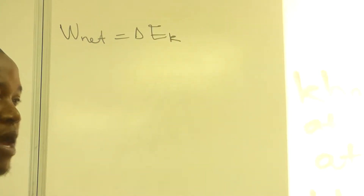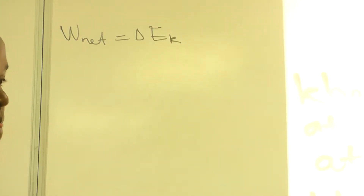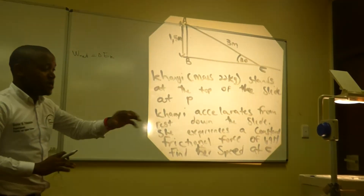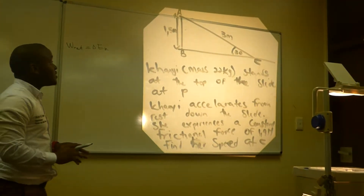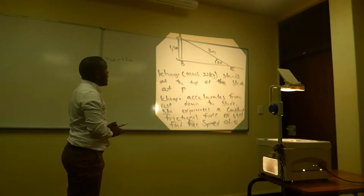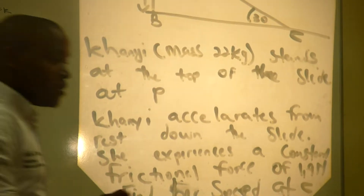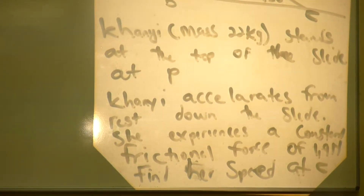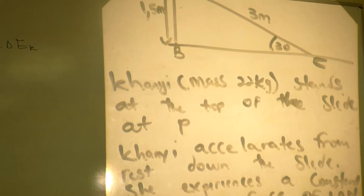Now we have a problem on the board. We have Kylie, and we have a ramp with points A, B, and C. Kylie is standing at the top of the ramp at point A. The height of the ramp is 1.5 meters.